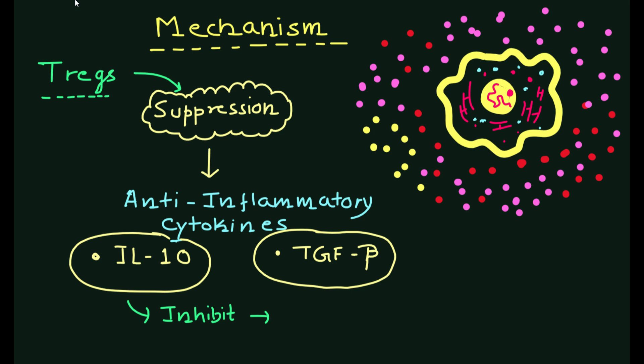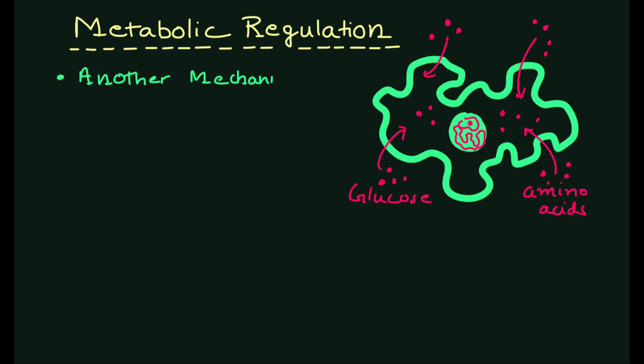They can also directly kill activated T cells through a process called cytolysis. Another mechanism used by Tregs is called metabolic regulation.